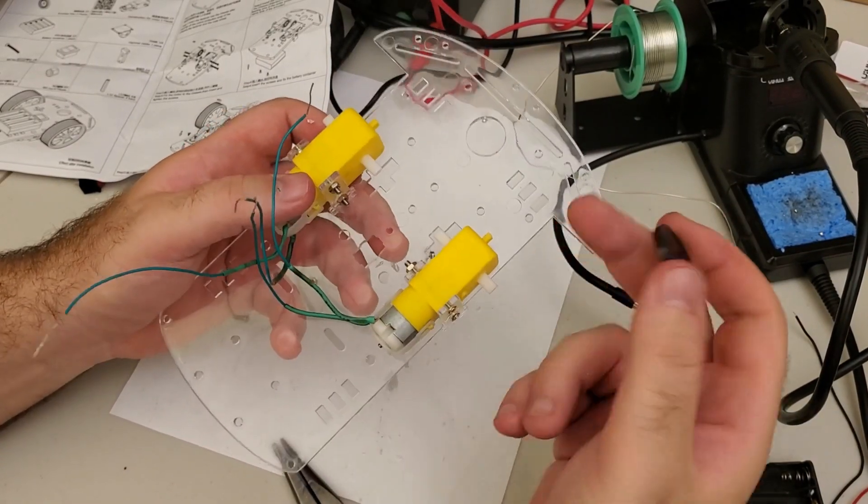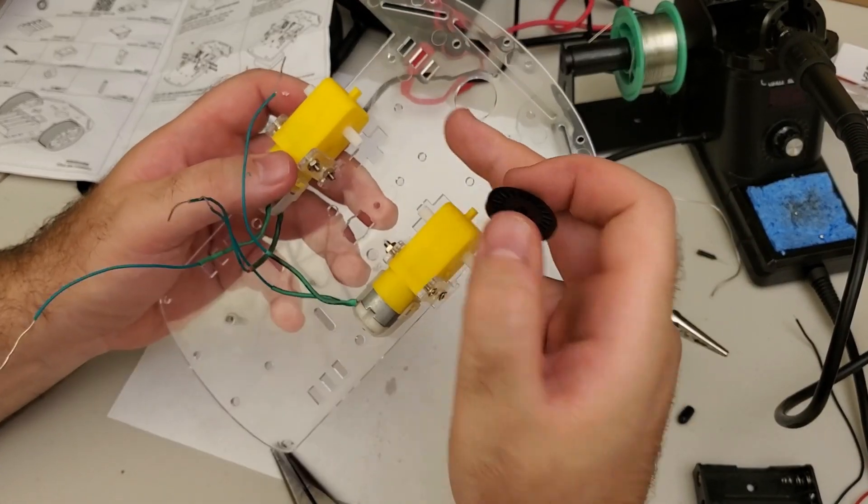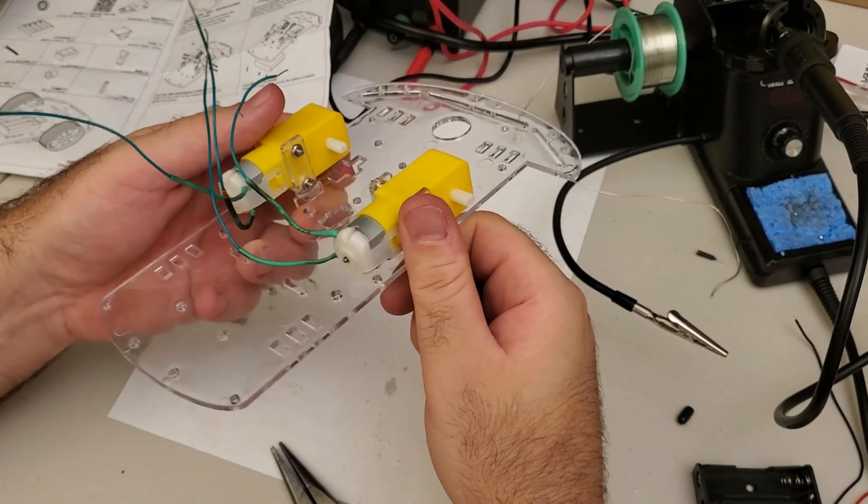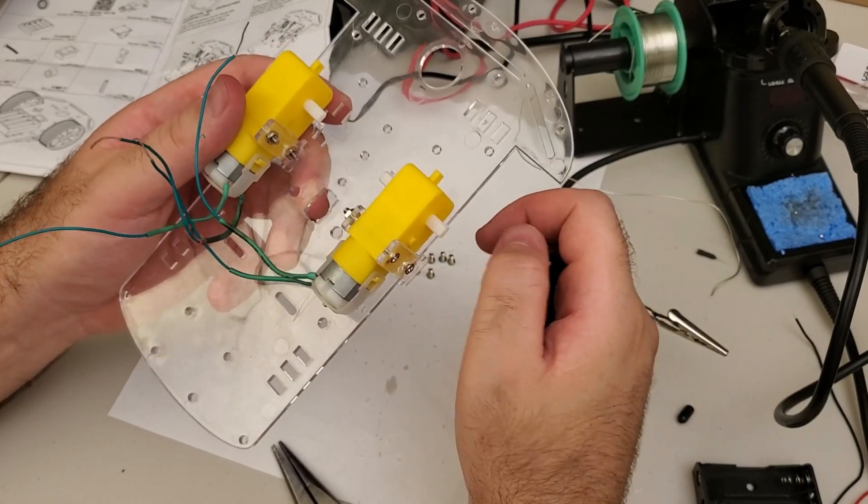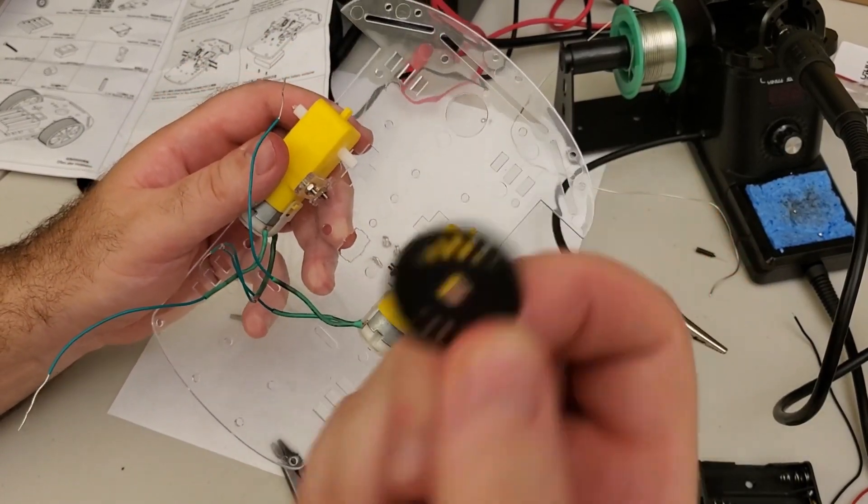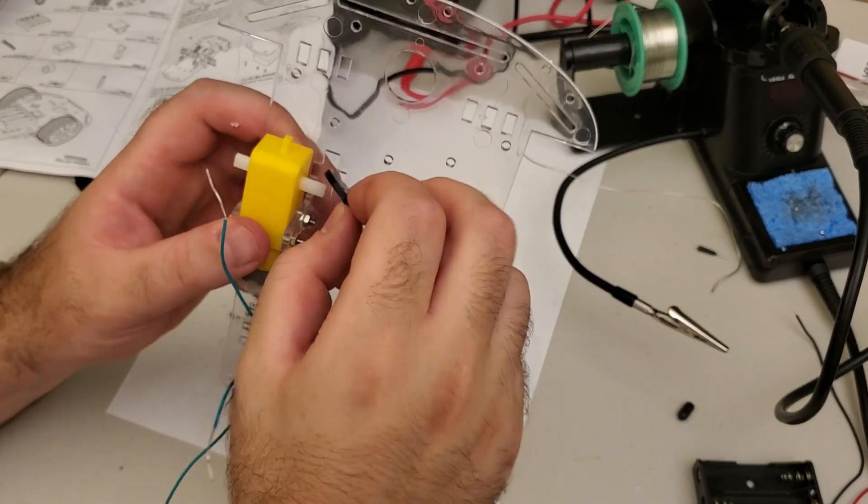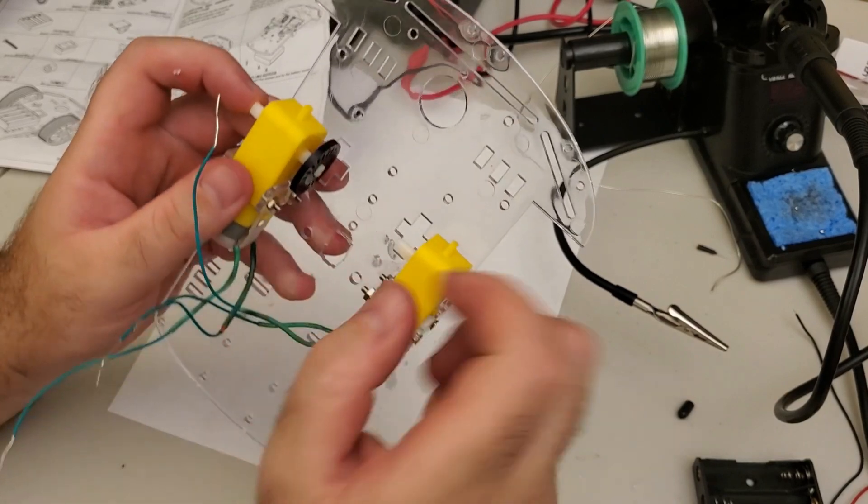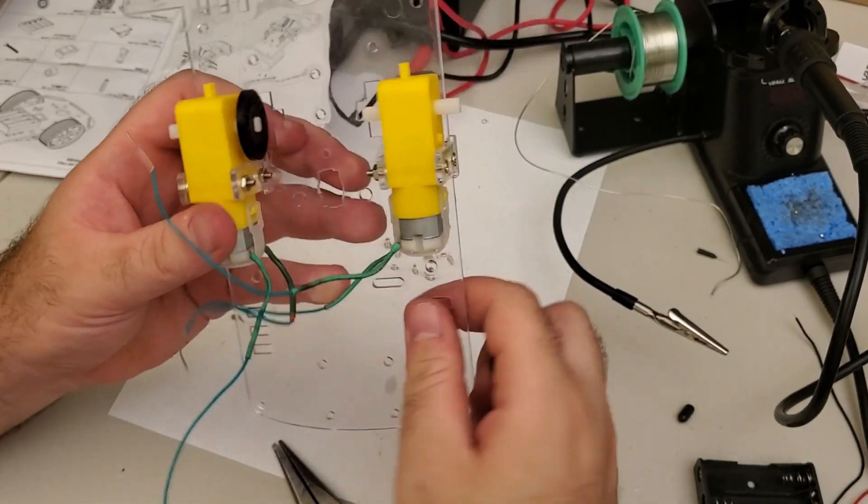For the time being we will not add encoders to our design. The encoders will be included later on once we test this minimal design without encoders and once we make sure that the system is functioning properly. However, we will still add these encoder discs or encoder wheels. We need to add them over here and make sure that they can spin freely. Later on we will verify that.